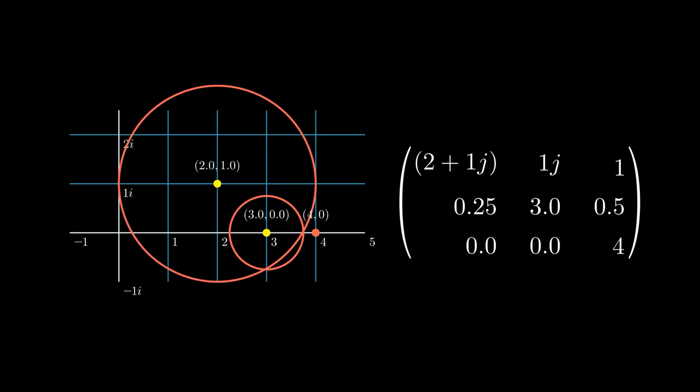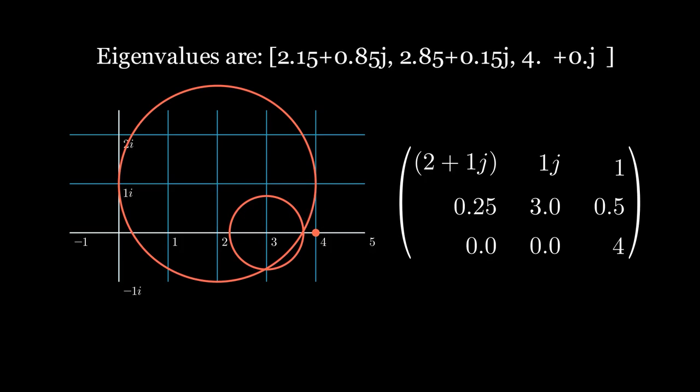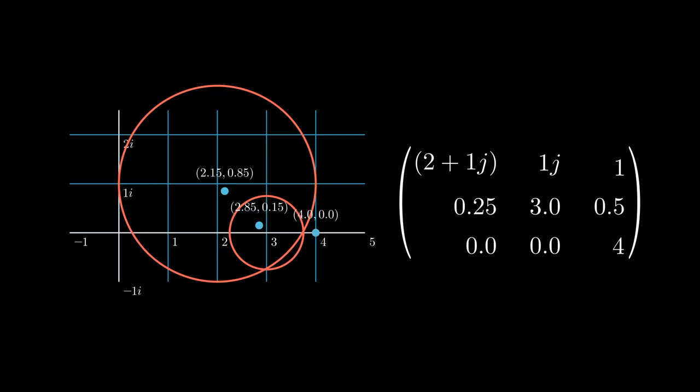Now, it's the fun part. If we calculate the eigenvalues of this matrix, and put them in the complex plane. Hmm, interesting. The eigenvalues are all inside these Gershgorin disks. Could it be a coincidence?